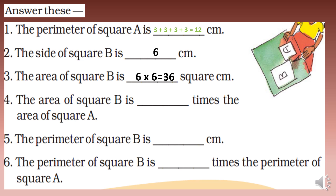The area of square B is how many times the area of square A? Area of square A is nine square centimeters, area of square B is thirty-six square centimeters. Nine fours are thirty-six, so area of square B is four times the area of square A. The perimeter of square B is six multiplied by four, which equals twenty-four centimeters — that is two times the perimeter of square A, which was twelve centimeters.